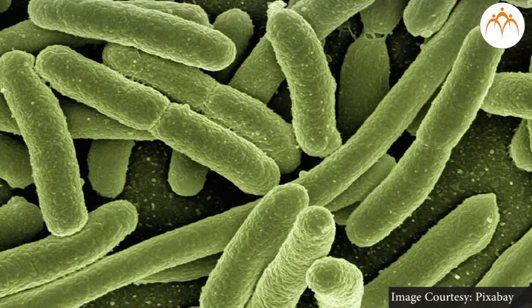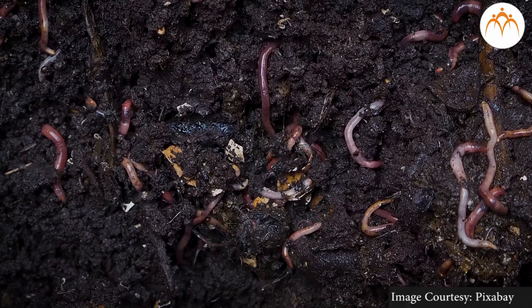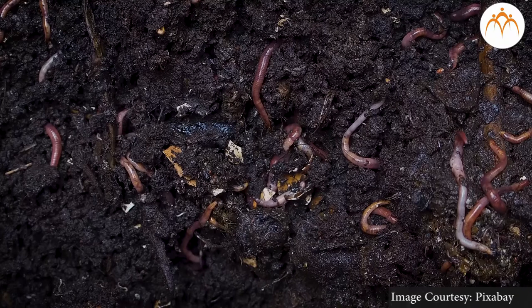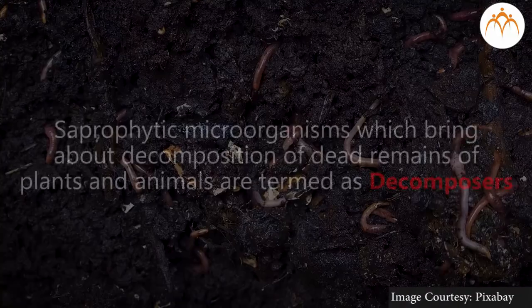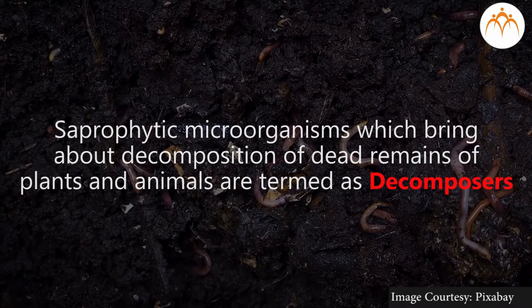Aren't microorganisms also part of all ecosystems? What would be the term for them? Apart from some microorganisms which are photosynthetic, most of the other microorganisms like bacteria and fungi use dead decaying complex organic matter as a source of food. While doing so, they break down the complex organic matter into simple, inorganic and elemental form which is released into soil, water or air in the surroundings. Hence, such saprophytic microorganisms which bring about decomposition of dead remains of plants and animals are termed as decomposers. So all that was obtained from the abiotic components of the ecosystem is returned back to the environment.